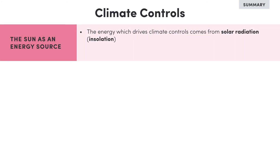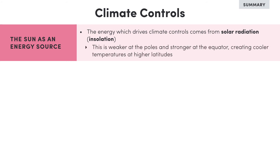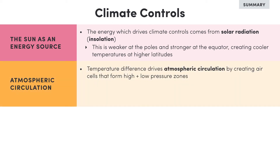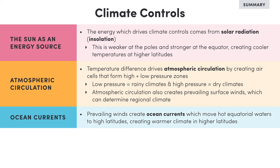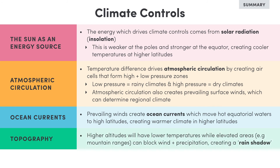So that was a lot of information. Let's recap. The energy which drives climate controls comes from solar radiation or insolation. Insolation is weaker at the poles and stronger at the equator, creating cooler temperatures at higher latitudes. This temperature difference drives atmospheric circulation, creating air cells that form high and low pressure zones at certain latitudes. Low pressure bands create rainy climates, while high pressure bands create dry climates. Atmospheric circulation also creates prevailing surface winds, which can determine regional climate. These prevailing winds in turn create ocean currents, which move hot equatorial waters to higher latitudes, creating warmer climates. And topography can also be a determining factor: higher altitudes will have lower temperatures, while elevated areas such as mountain ranges can block wind and precipitation, creating a rain shadow.